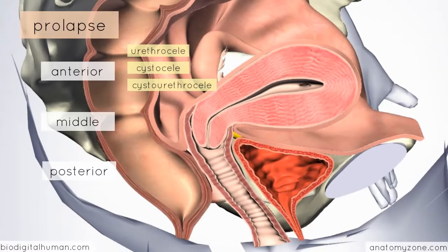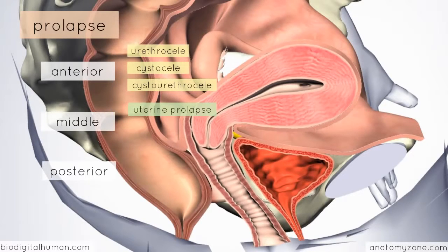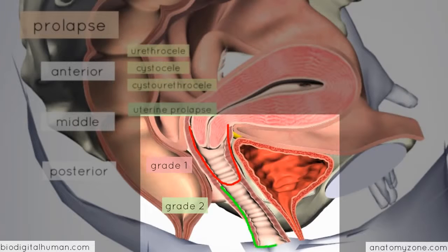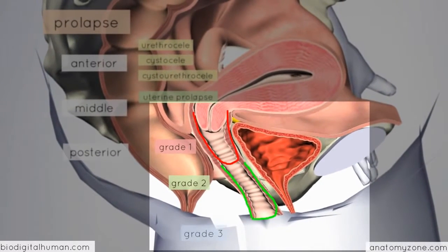In terms of the middle compartment, you can obviously get the uterus itself prolapsing through the vagina. Uterine prolapse is graded from 1 to 3 depending on the extent of descent. A grade 1 prolapse is only slight descent, contained within the vagina. In a grade 2 prolapse, the descent is further, with the cervix reaching the level of the introitus but the fundus remaining inside the pelvis. A grade 3 prolapse is when the entire uterus has prolapsed outside of the vagina, also referred to as procidentia.